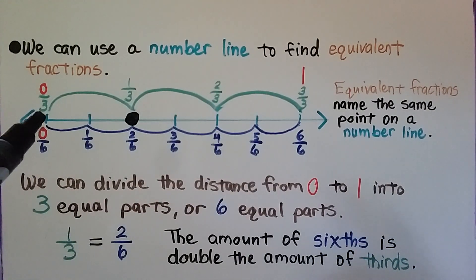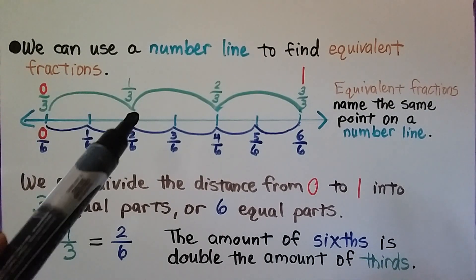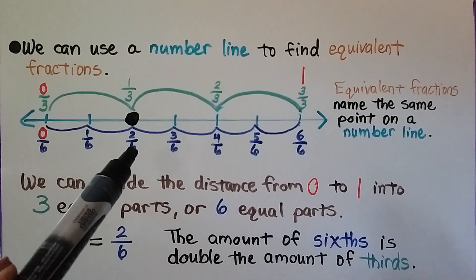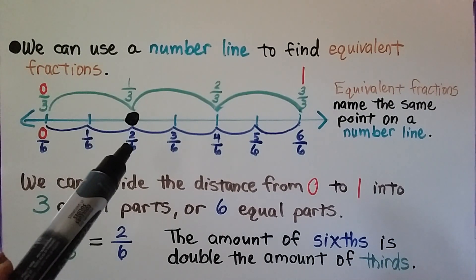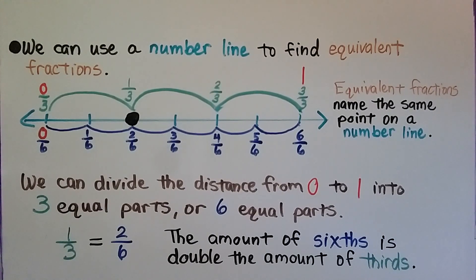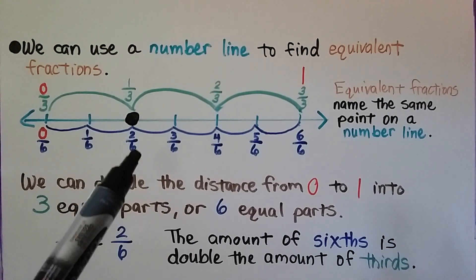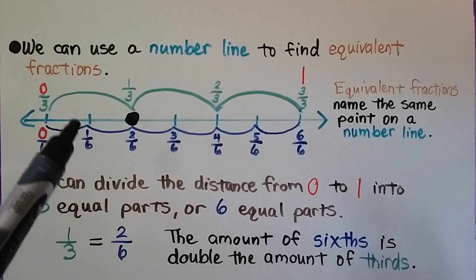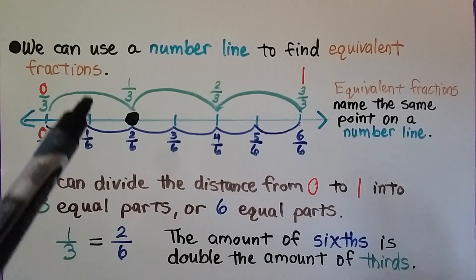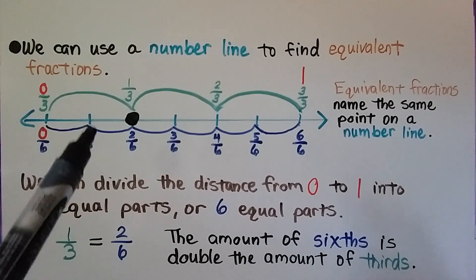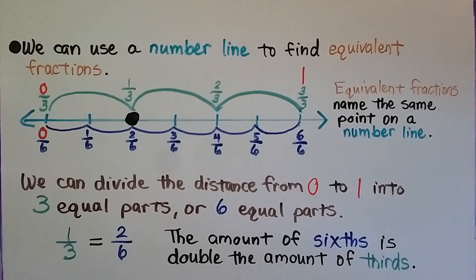We can see that one-third is meeting at the same point as two-sixths. The amount of sixths is double the amount of thirds. This one-sixth is half of the one-third. One-third is equal to two-sixths — they represent the same amount, and they're equivalent fractions.